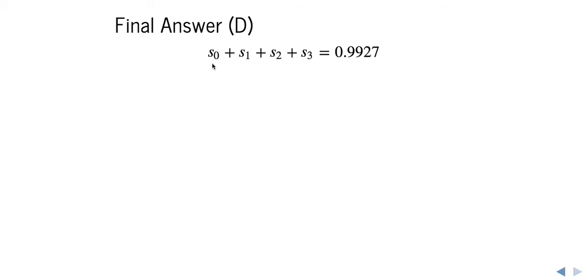So first we can sum up all of the s values from s_0 to s_3. That tells us the time that it takes to observe the first three events. And that's 0.9927. That's smaller than one, so we keep going.